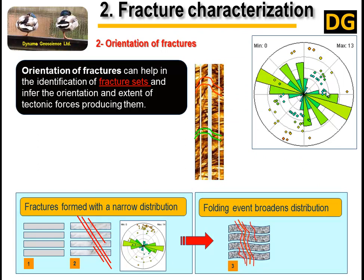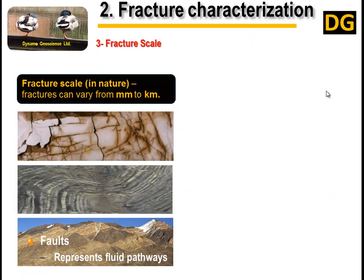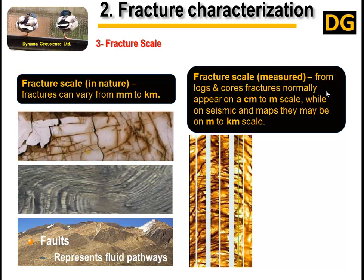First, shape — divided into two categories: constrained and unconstrained. Second, orientation of fractures, in order to identify the fracture sets and assess their impact on permeability, which is very important. Third is fracture scale, measured from outcrops on field trips or from logs — fractures vary from millimeters to kilometers.